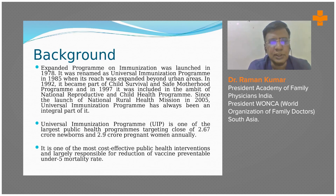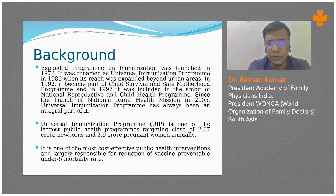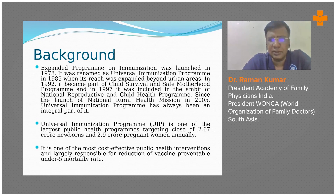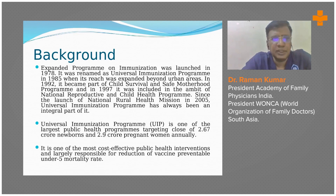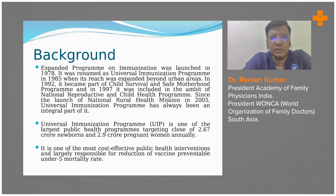In 1992, it became part of the Child Survival and Safe Motherhood Program. It was initially in 1978 — the same time when the Alma-Ata declaration was made, the conference of Alma-Ata, the Health for All declaration, done in Alma-Ata, which is in Kazakhstan, formerly USSR. In the same year, this Expanded Program on Immunization was launched, and then expanded and renamed as the Universal Immunization Program, expanded beyond urban areas. And in 1992, it became part of the Child Survival and Safe Motherhood Program.